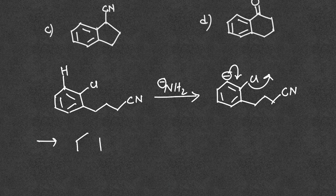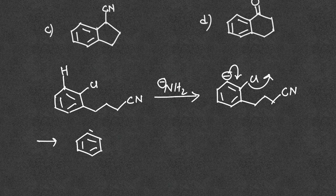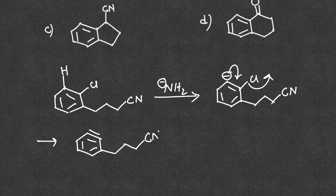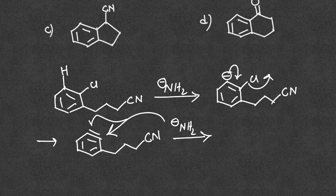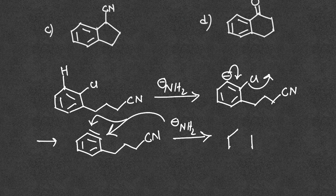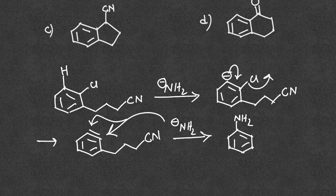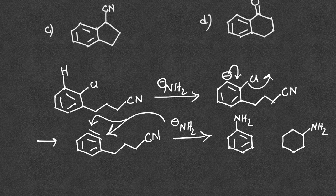From there the elimination of halogen takes place, so that will give you this benzyne intermediate. This NH2 can attack either this place or on this place, and depending on that you can get these two products. Either you can get NH2 group over here or you can get the NH2 group over here.